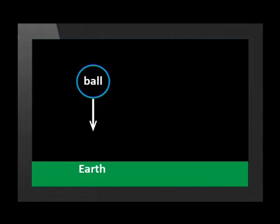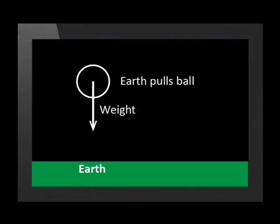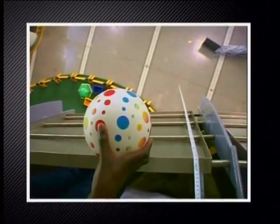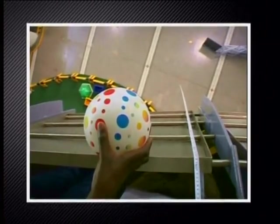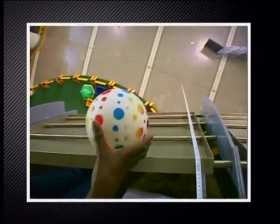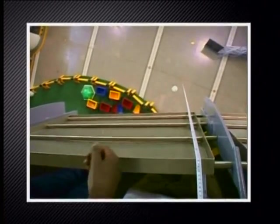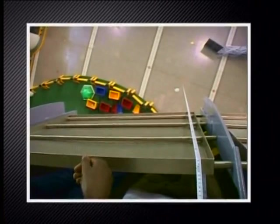It's interesting to think that the ball pulls the earth — it does so just as strongly as the earth pulls the ball. For now we will focus on the force called weight. Objects are pulled to the earth by a gravitational force called the object's weight. An object is in free fall when its weight is the only significant vertical force on it.